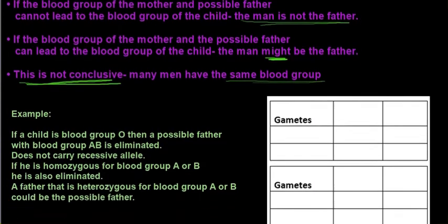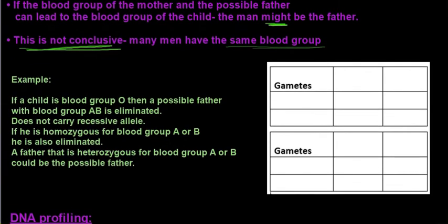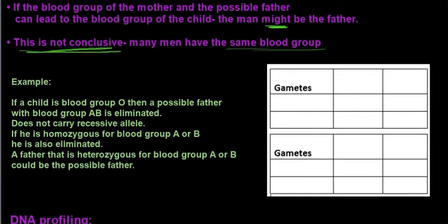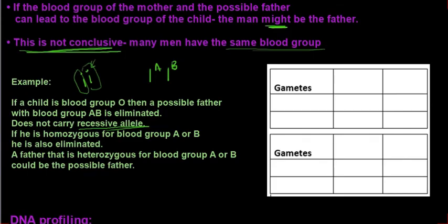Let's look at an example. If a child is blood group O, a possible father with blood group AB is eliminated. Why? Because he does not carry the recessive allele that blood group O has. Remember, the child receives one allele from the mom and one allele from the dad. Does this father carry a recessive allele? No.